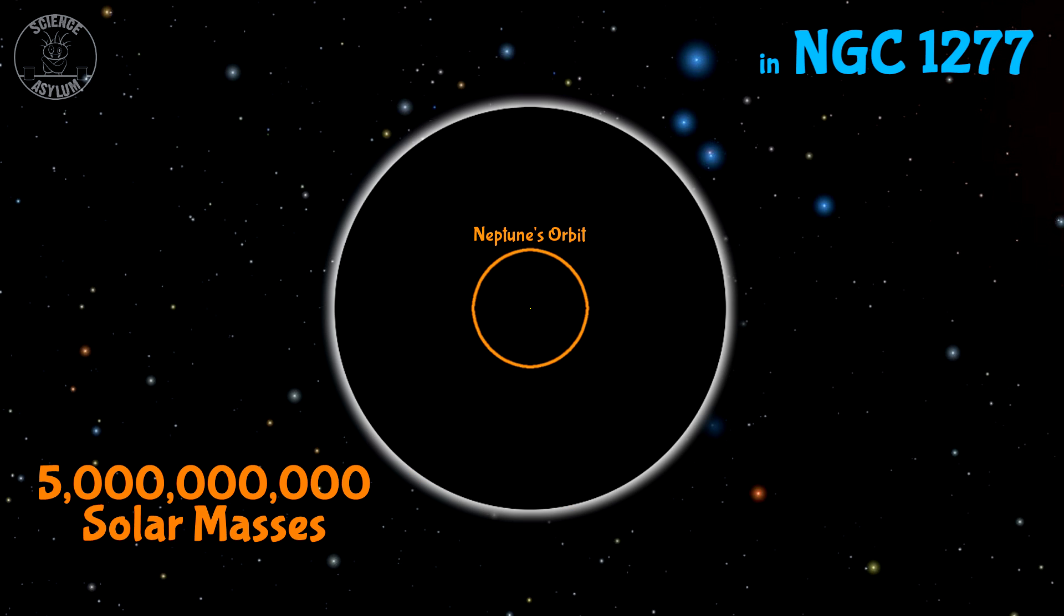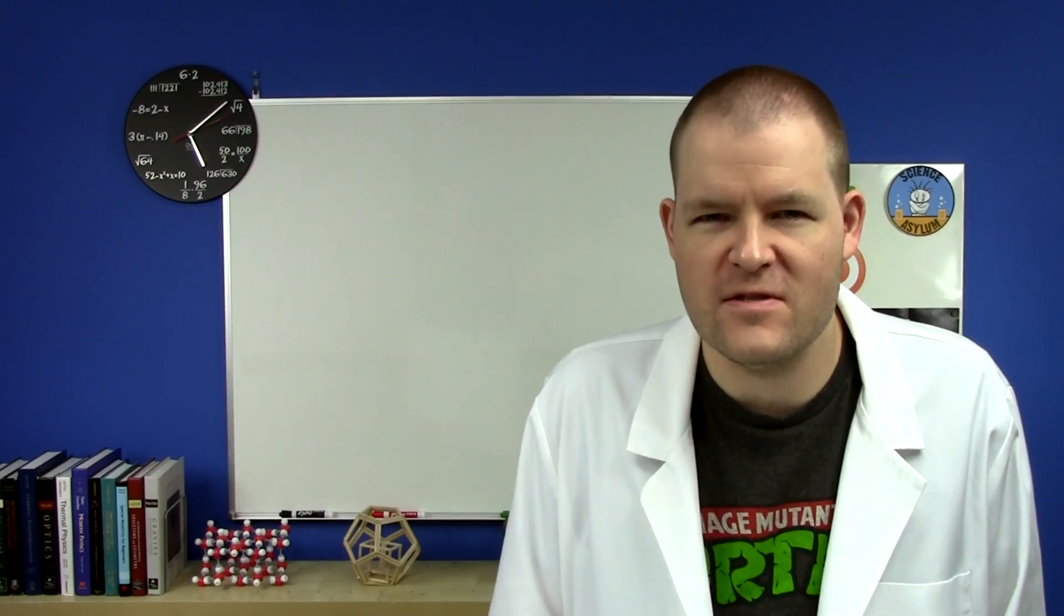There's one in the galaxy NGC 1277 that's probably about 5 billion solar masses. Although it's difficult to get data about black holes, because, you know, they're black. Anyway, back to the original question. What are black holes? They're massive black balls of death. But only if you get too close.